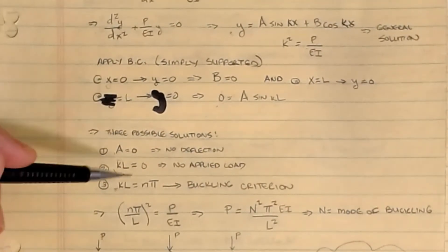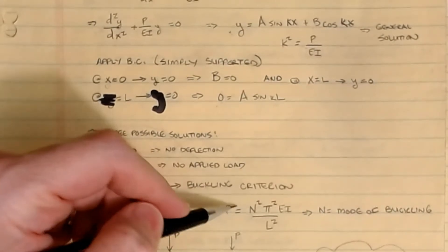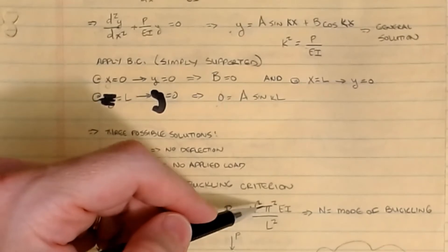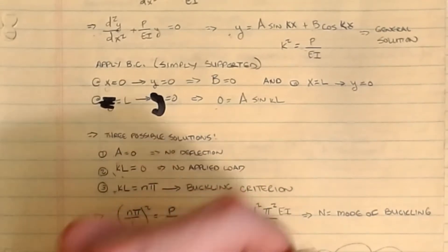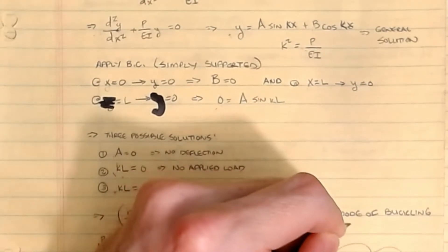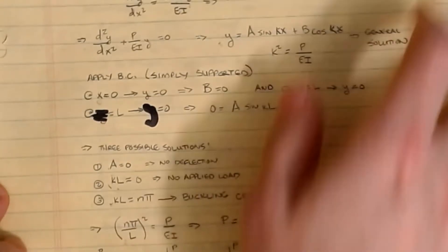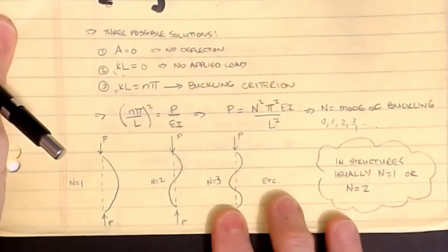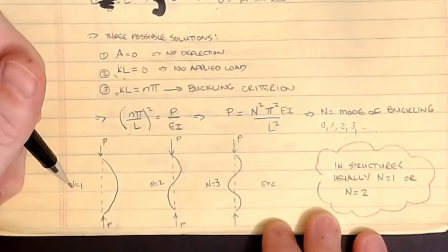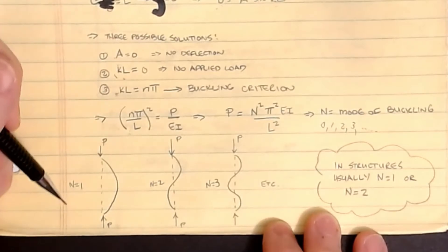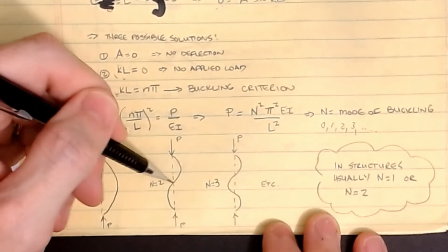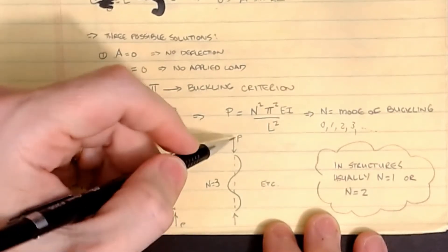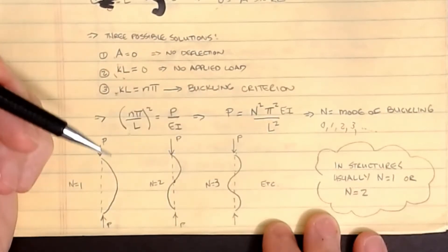Rearranging the governing differential equation result gives: P = n²π²EI/L², where n is the mode of buckling describing the general shape. For n = 1, the buckled shape is a single curve between the two endpoints. For n = 2, there are two curves with one interior zero crossing. For n = 3, three curves, and so on.